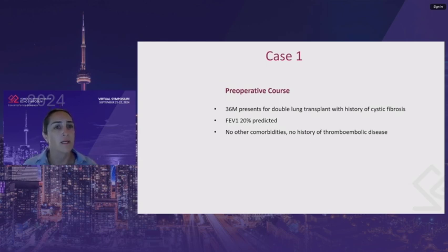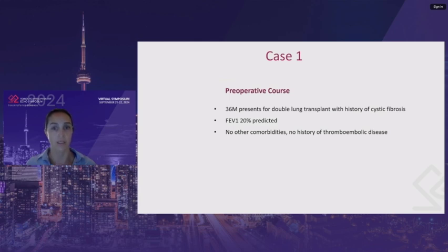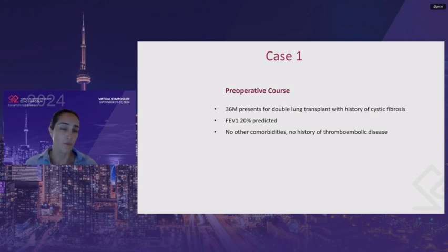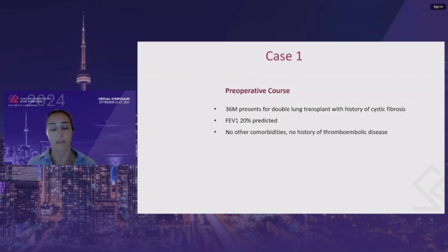Case one is a 36-year-old gentleman who presents for a double lung transplant with a history of cystic fibrosis. This is his first transplant. Aside from FEV1 of 20% predicted, he doesn't have any other comorbidities, and specifically he has no history of thromboembolic disease.